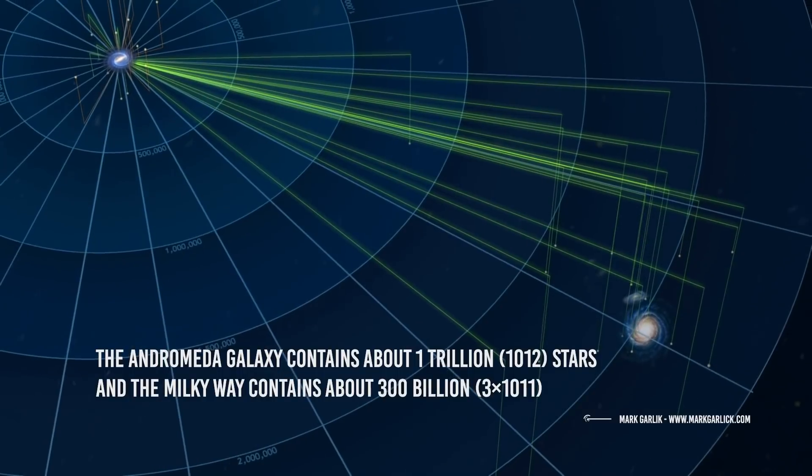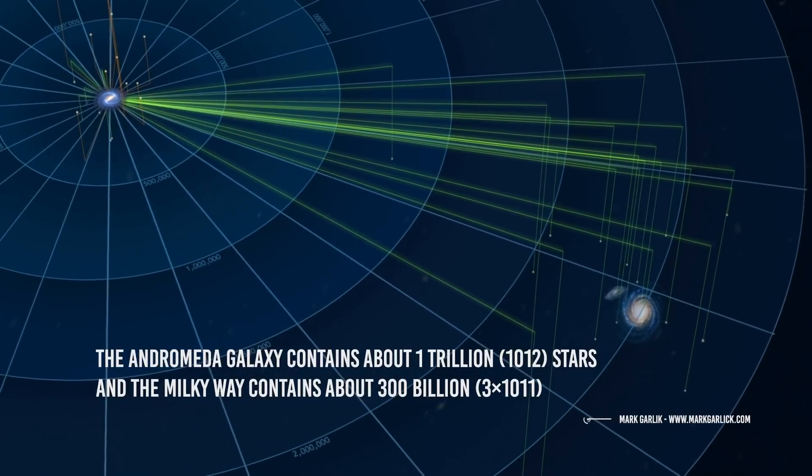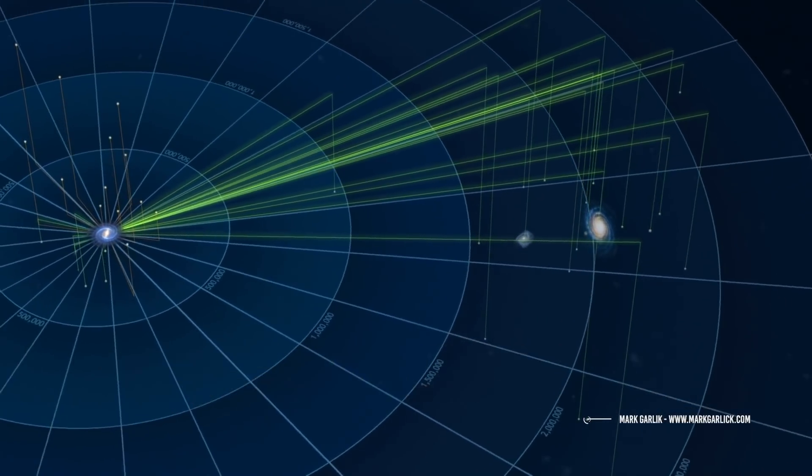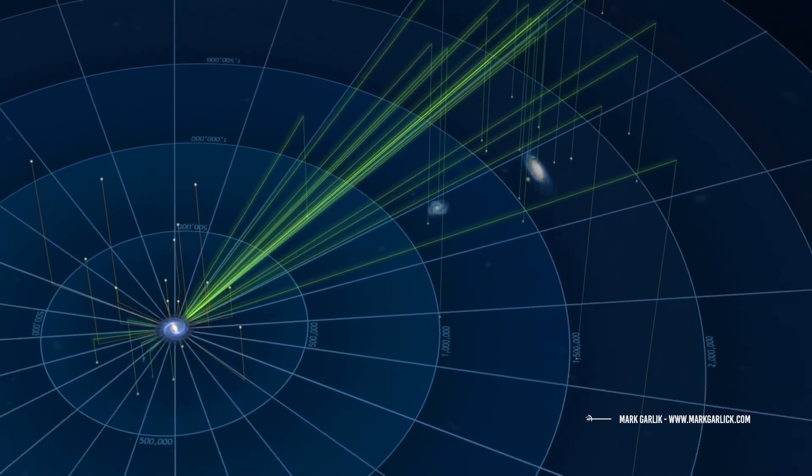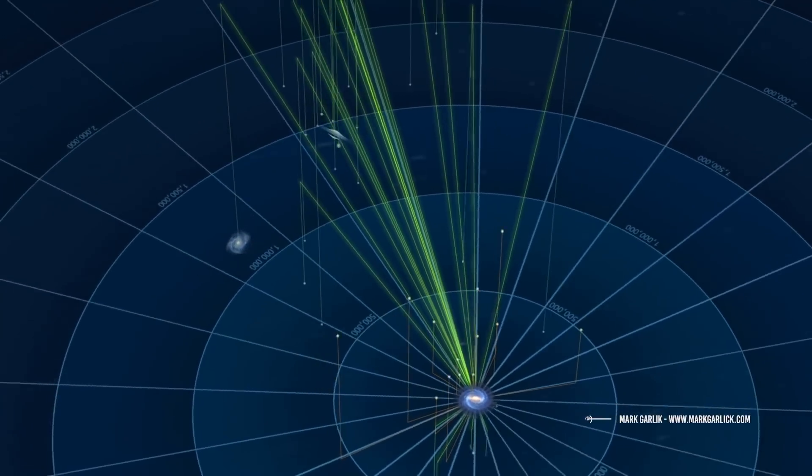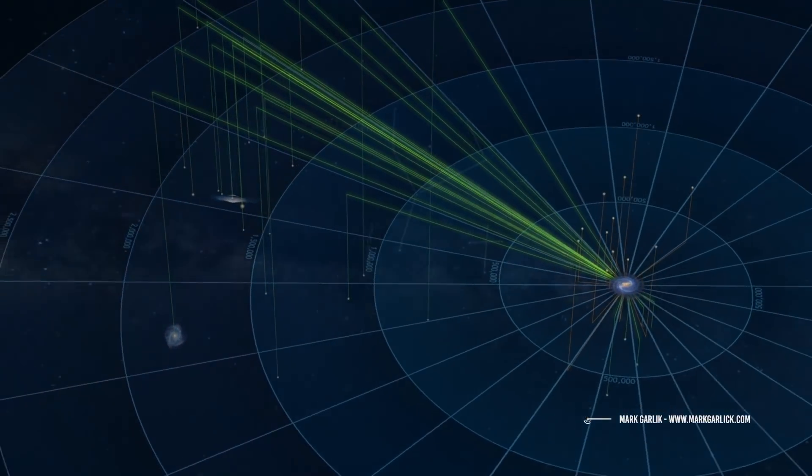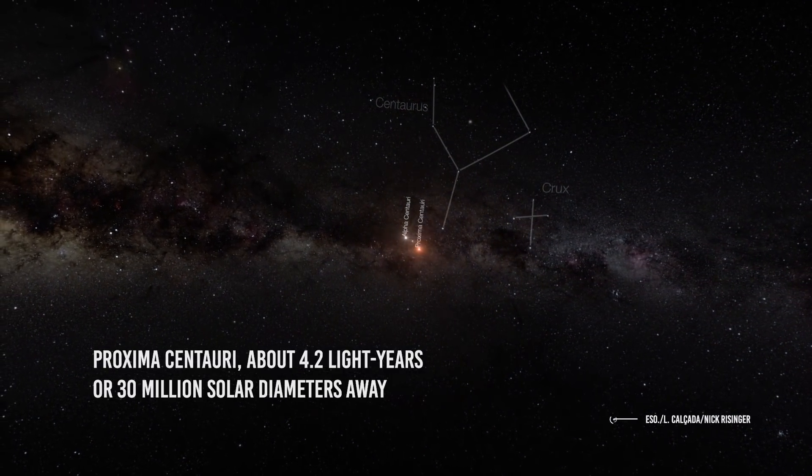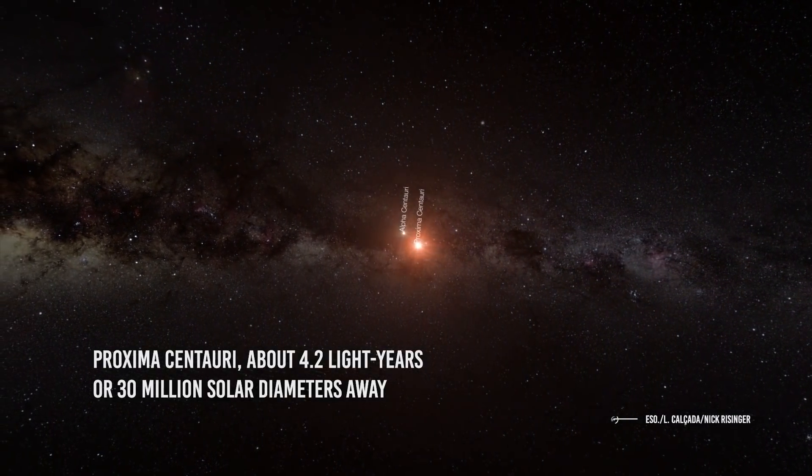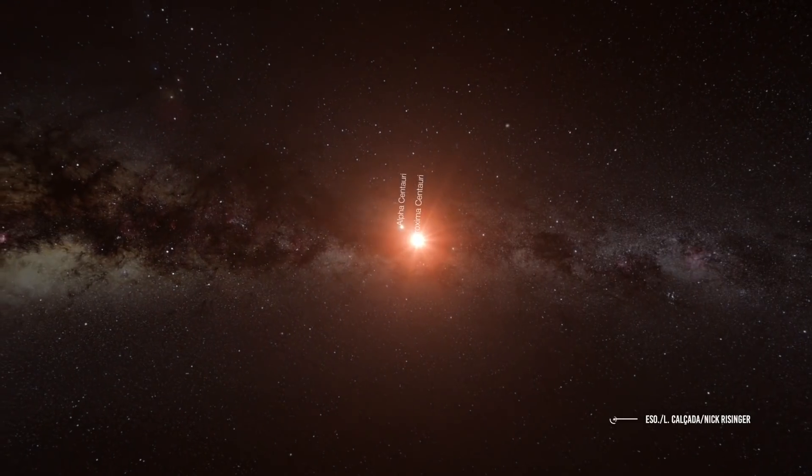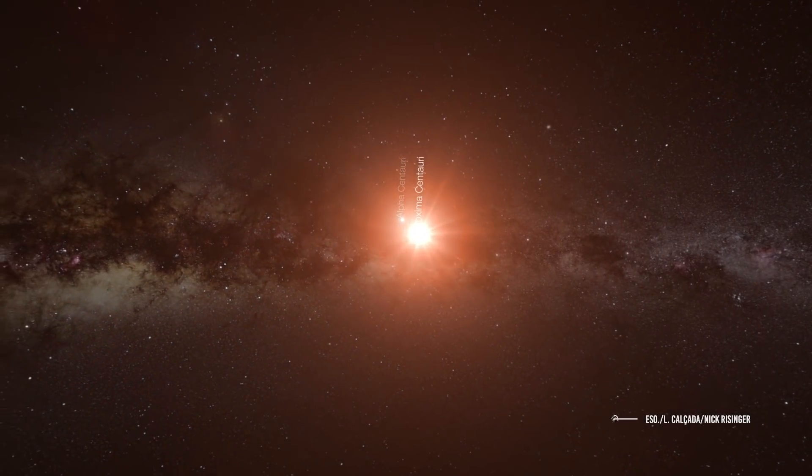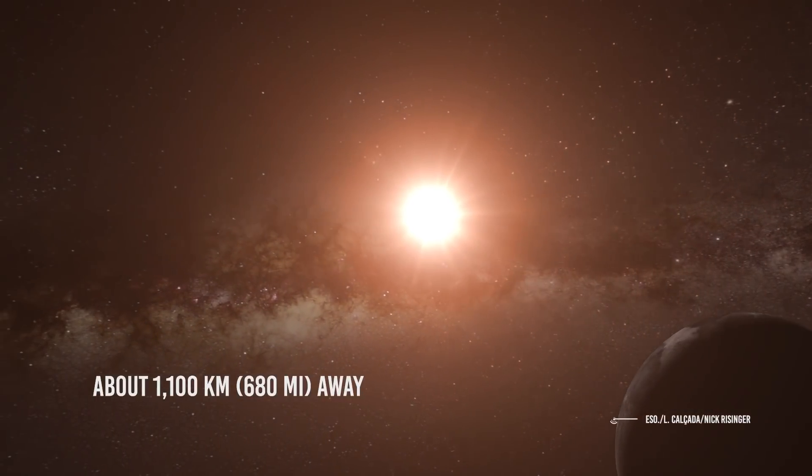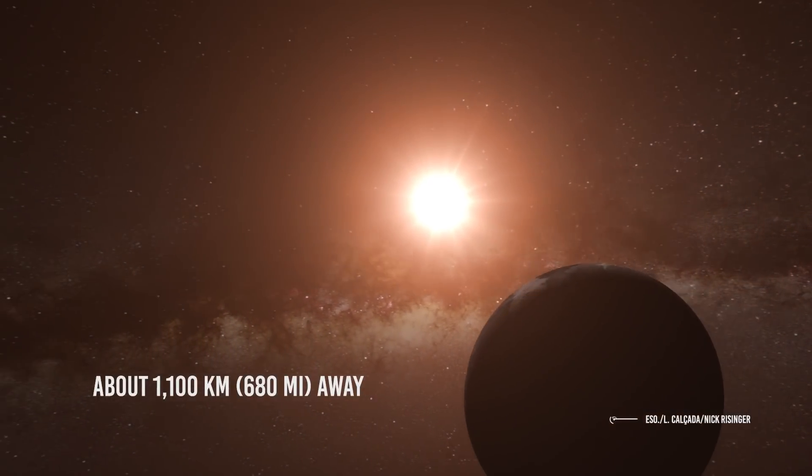While the Andromeda galaxy contains about 1 trillion stars and the Milky Way contains about 300 billion, the chance of even two stars colliding is negligible because of the huge distances between the stars. For example, the nearest star to the Sun is Proxima Centauri, about 4.2 light-years or 30 million solar diameters away. To visualize that scale, if the Sun were a ping-pong ball, Proxima Centauri would be a pea about 1,100 kilometers or 680 miles away.